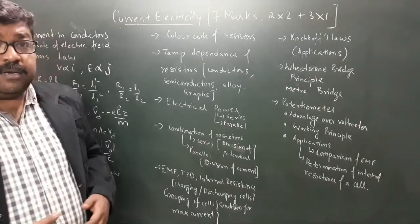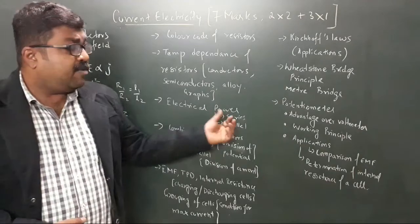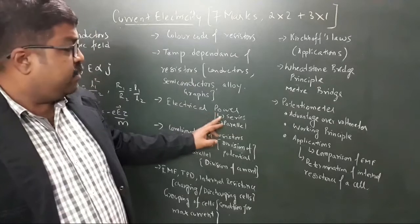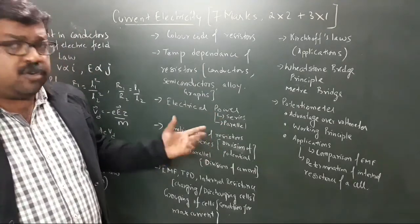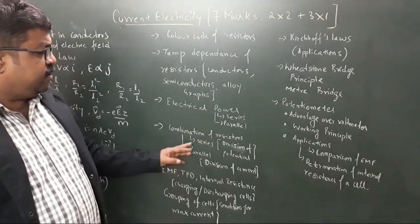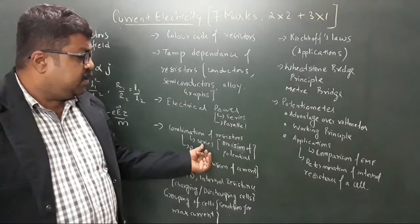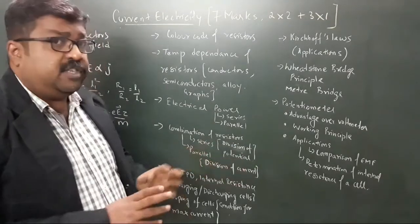Then we have electrical power and combination of resistors or grouping of resistors. You have series grouping and parallel grouping of resistors. In series grouping, there is a division of potential; in parallel grouping, there is a division of current.